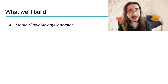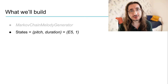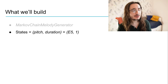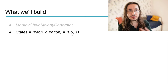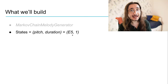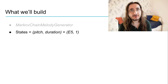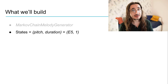We're going to be mainly focusing on one class called Markov Chain Melody Generator. The type of encoding of our musical states is going to be quite straightforward. We're going to be considering both pitch and duration at the same time, encoding them using a tuple where the first item is pitch — represented as the pitch name, like for example E — and the octave, for example E5. The second item is going to be duration.